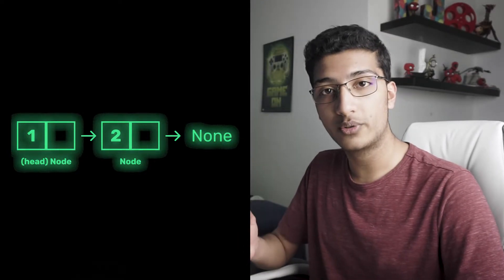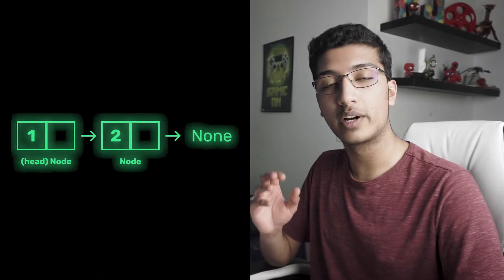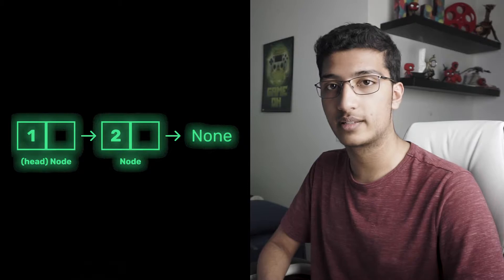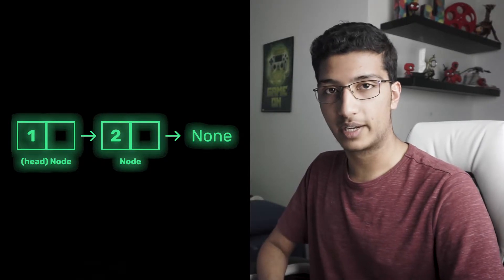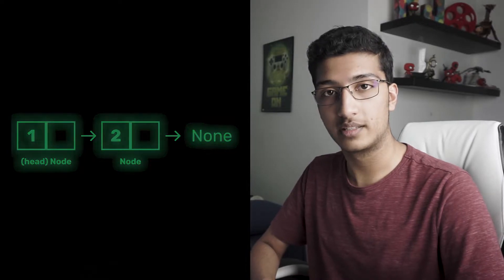These pairs of blocks are called nodes, and the first node is known as the head — where you start if you're iterating over the linked list. The last node points to a None type object to indicate it's the last element. This is useful for dynamic memory allocation data structures like stacks and queues, but we're just going to look at how to implement one in Python.